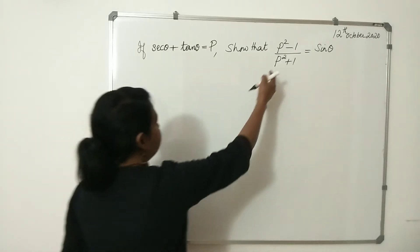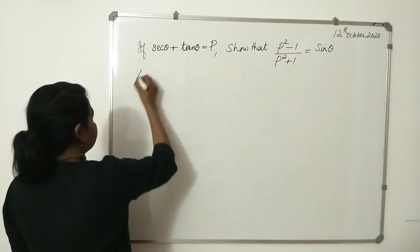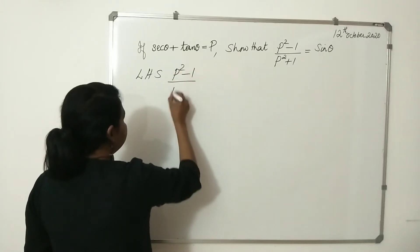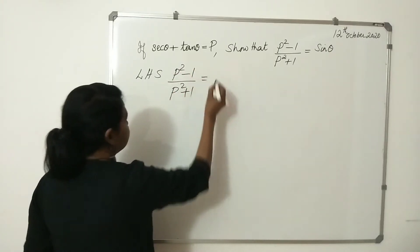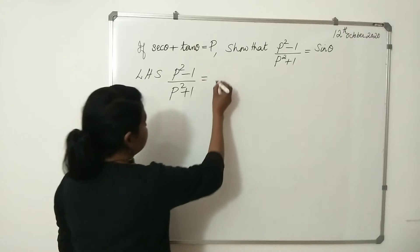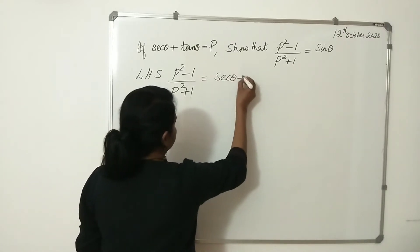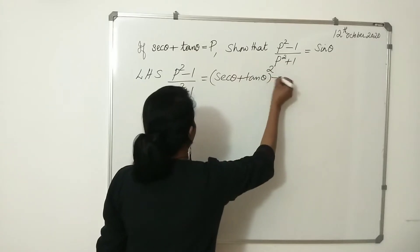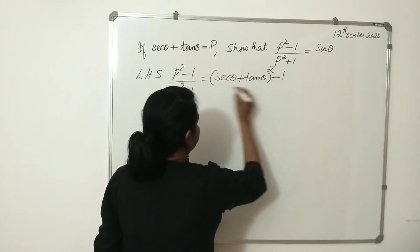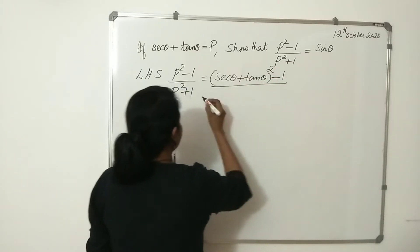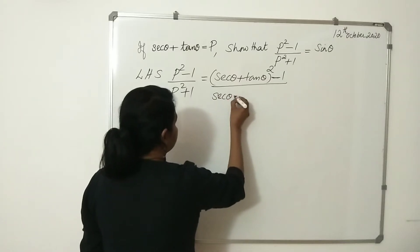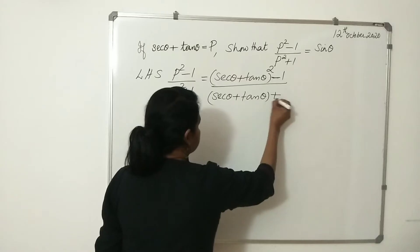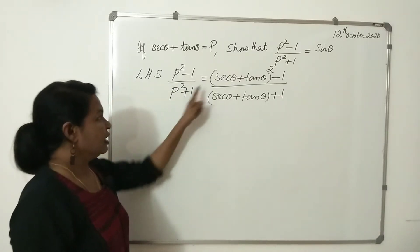First, we take the LHS, that is (p² - 1) divided by (p² + 1). Since p = secθ + tanθ, we substitute: (secθ + tanθ)² - 1, divided by (secθ + tanθ)² + 1. Now expanding: